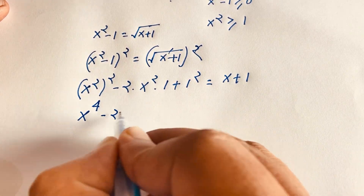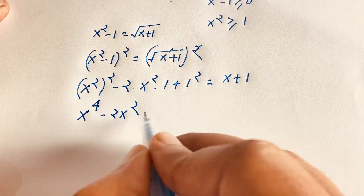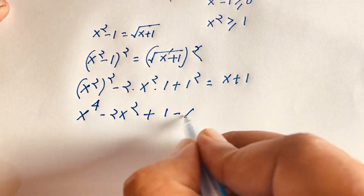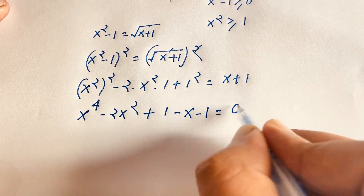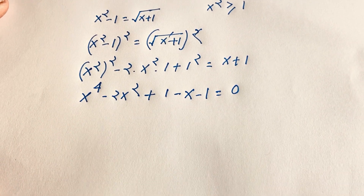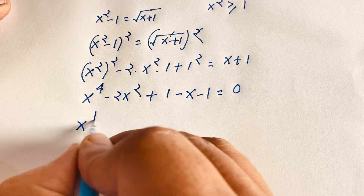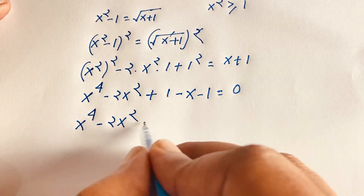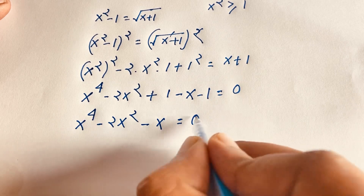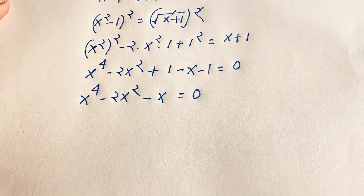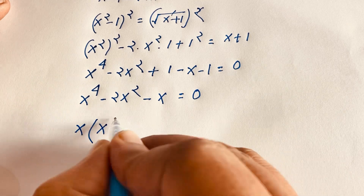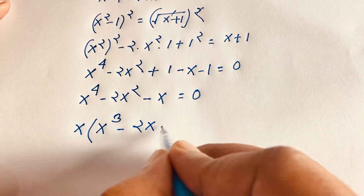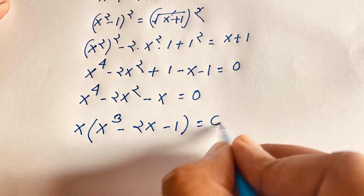This expression becomes x to the power of 4 minus 2x squared plus 1. Moving x plus 1 to the left side gives minus x minus 1 equal to 0. So we have x to the power of 4 minus 2x squared, the 1s cancel out, and we have negative x equal to 0. Factoring out x gives x times the quantity x cubed minus 2x minus 1 equals 0.